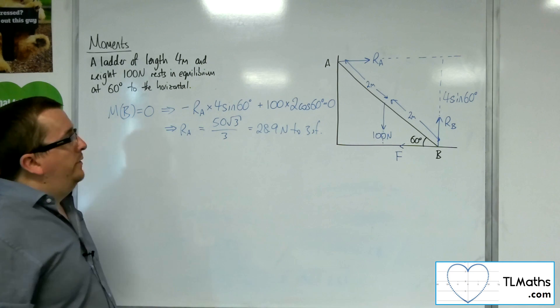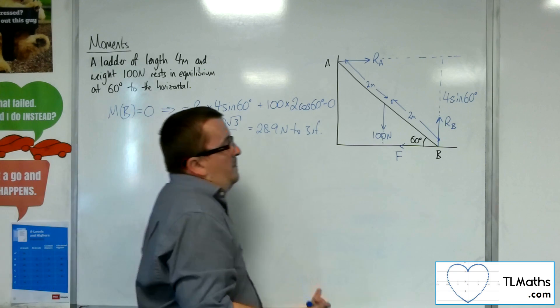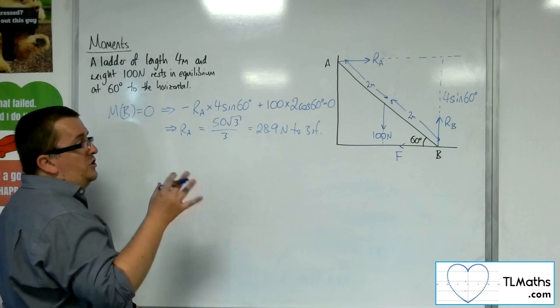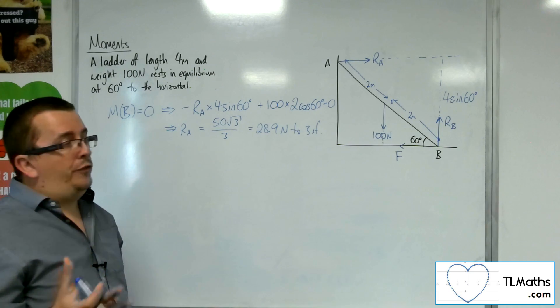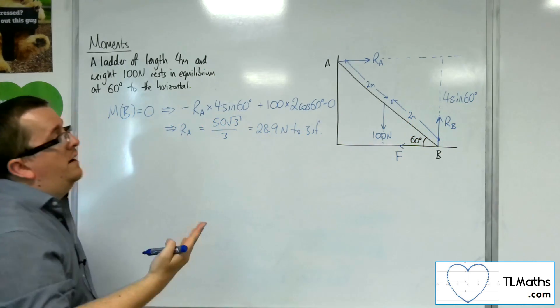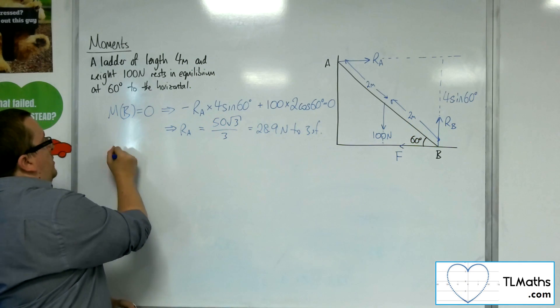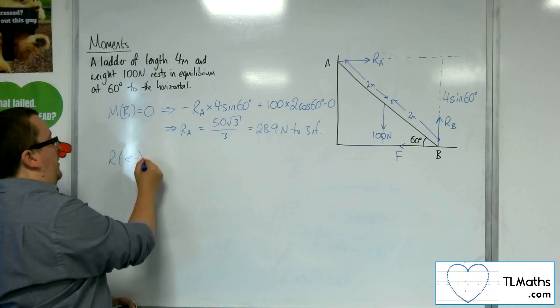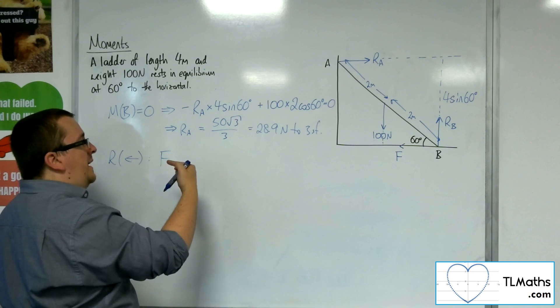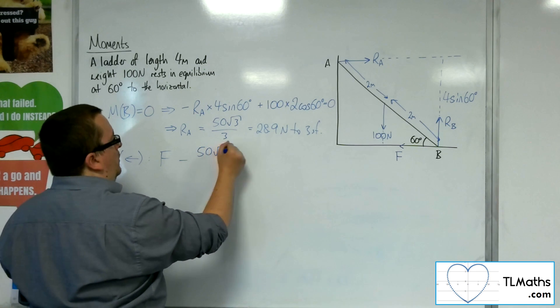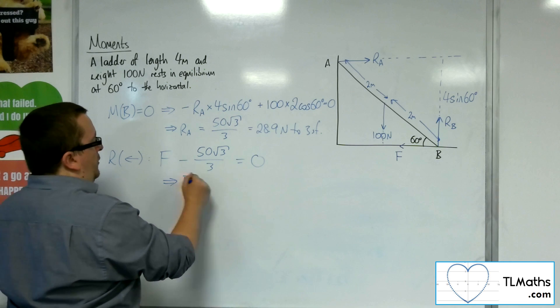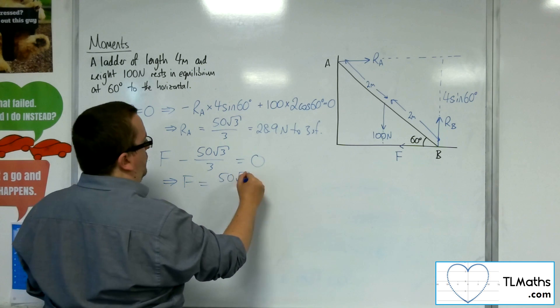So once I've found that, I'll probably be asked to find F and RB as well. Well, at that point, I can just start to use resolving forces, because there's only two forces that are working horizontally, RA and F. So if I resolve horizontally, taking to the left as positive, I've got the frictional force working to the left. I've got RA working to the right. That's got to be 0.